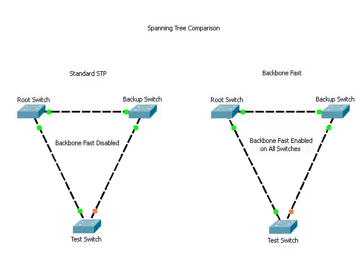We are looking at two groups of switches. Let's pretend that we have already configured Backbone Fast on all three switches on the right-hand side. The BPDUs originate from the root switch and spread out to the rest of the network. Let's create an indirect link failure by shutting down the interface between the root switch and the backup switch.